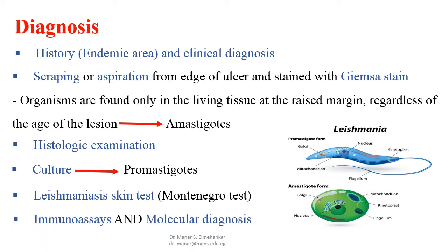For diagnosis: history taking — patient from an endemic area — and clinical diagnosis. For lab diagnosis, scraping or aspiration from the edge of the ulcer is stained with Giemsa stain. Organisms are found only in the living tissue at the raised margin, regardless of the age of the lesion, and amastigote forms are found.